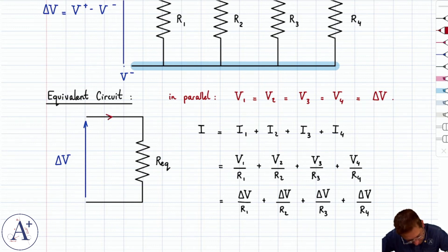So in other words, whatever current I would have here, which would be I, would have to be such that I also satisfies Ohm's law and is equal to delta V over R equivalent. So we get here on the left-hand side, delta V divided by R equivalent.